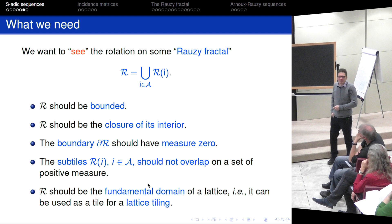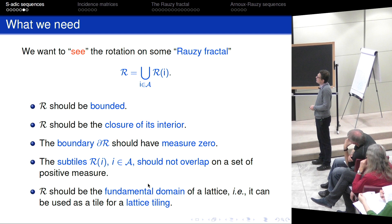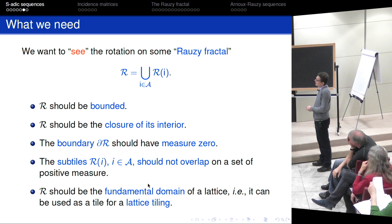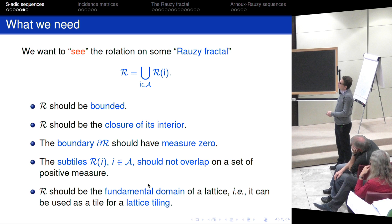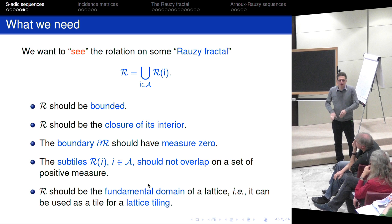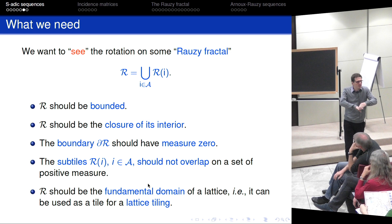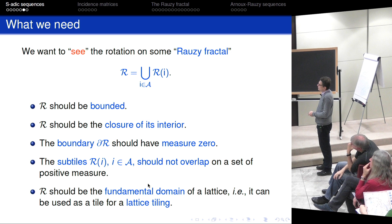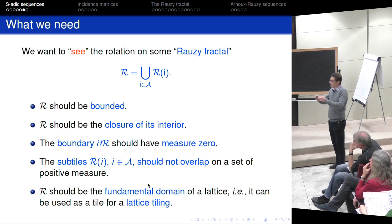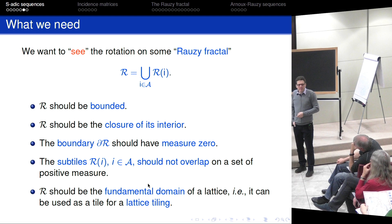Our aim is to see the rotation we are conjugated to on some Rauzy fractal — not yet defined. This Rauzy fractal should be subdivided into subtiles, each corresponding to a letter. We will also have a broken line in our general setting. We want this to be bounded, closed by definition, and even more: we would like it to be topologically nice — the closure of its interior with boundary of measure zero — so there are no considerable overlaps. And R should be the fundamental domain of a lattice, so we can wrap it around a torus and get our rotation.